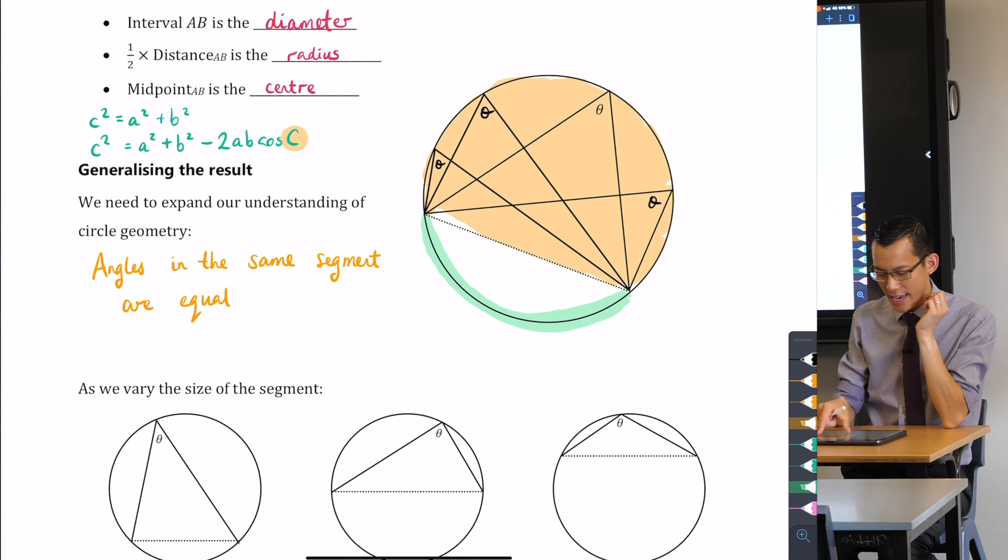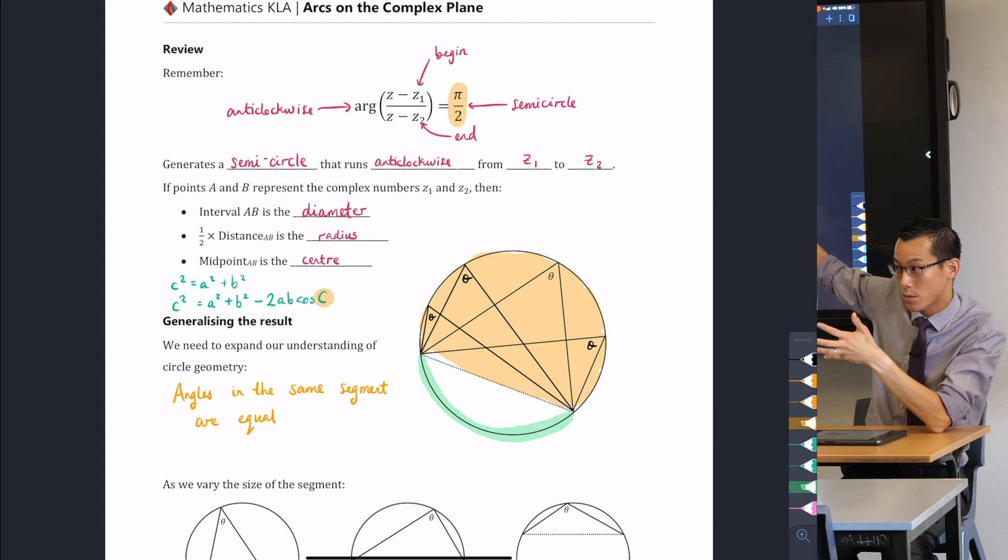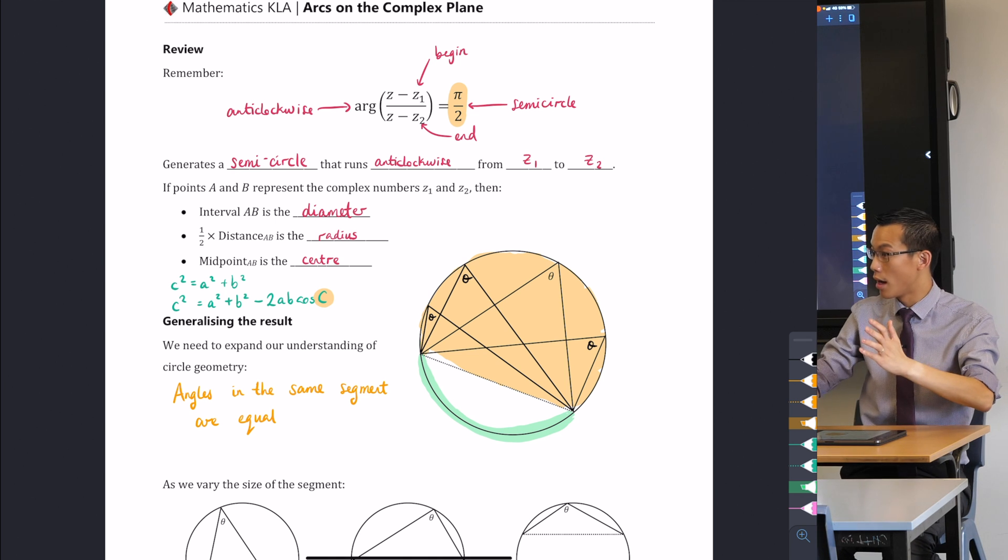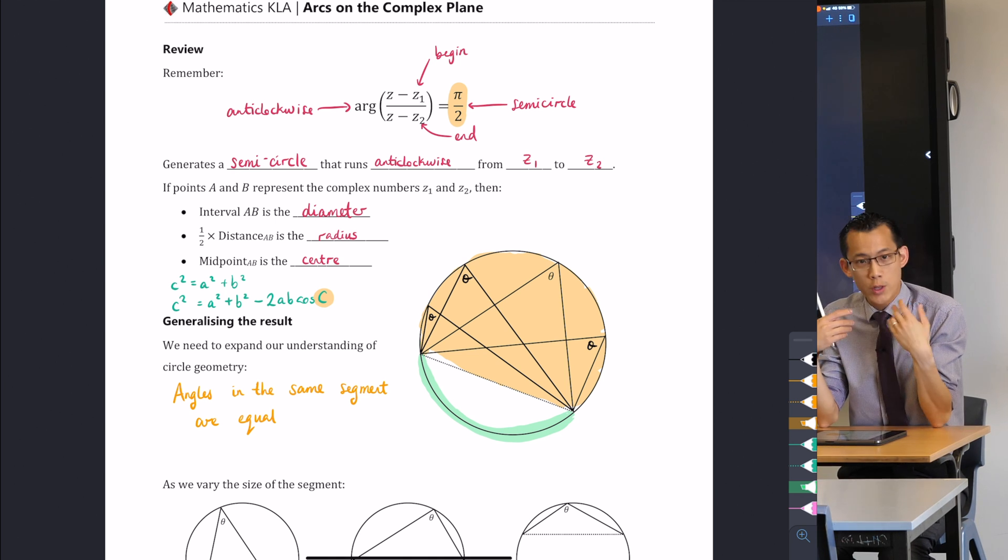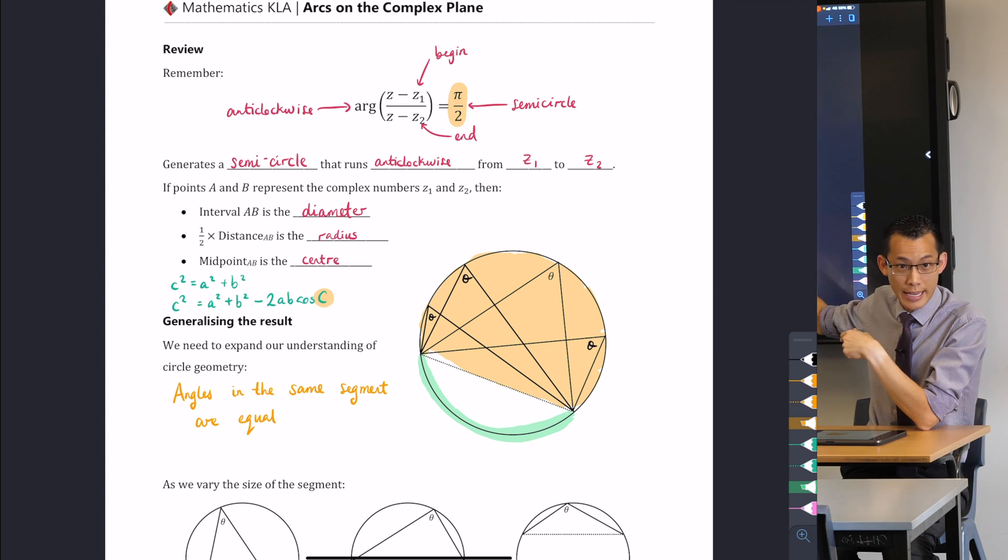Now this means that what you're going to get up above, if we change this angle from pi on 2 to something else, you're still going to get an arc of some kind, it's just going to be bigger or smaller than a semicircle.